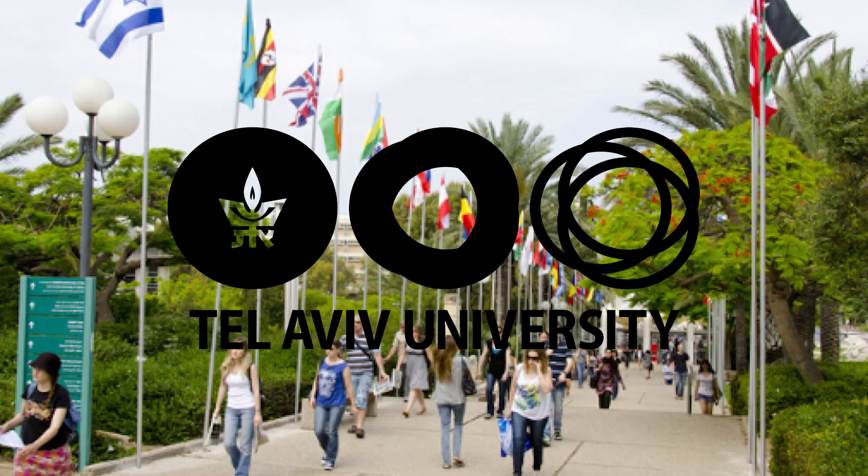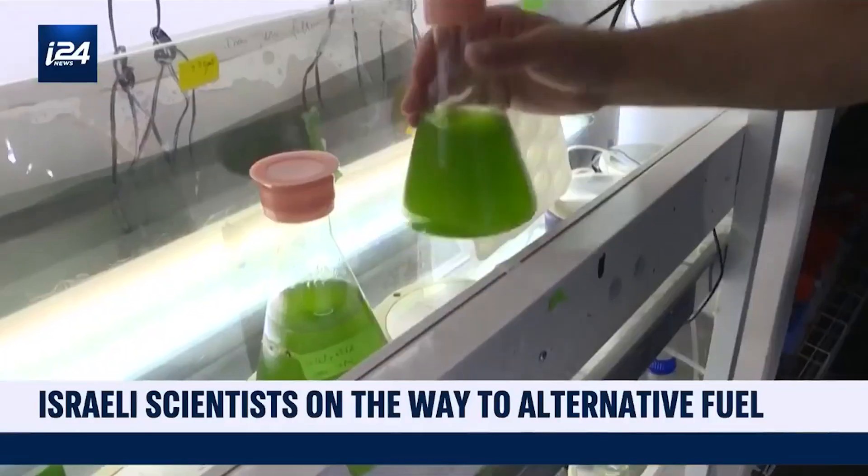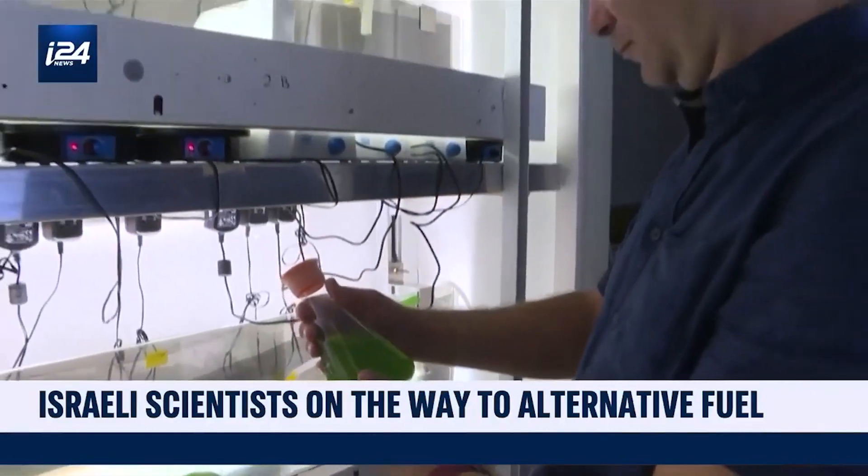In a groundbreaking development, researchers from Tel Aviv University in Israel have taken a significant step forward by producing green hydrogen at an astonishing 90% efficiency level.